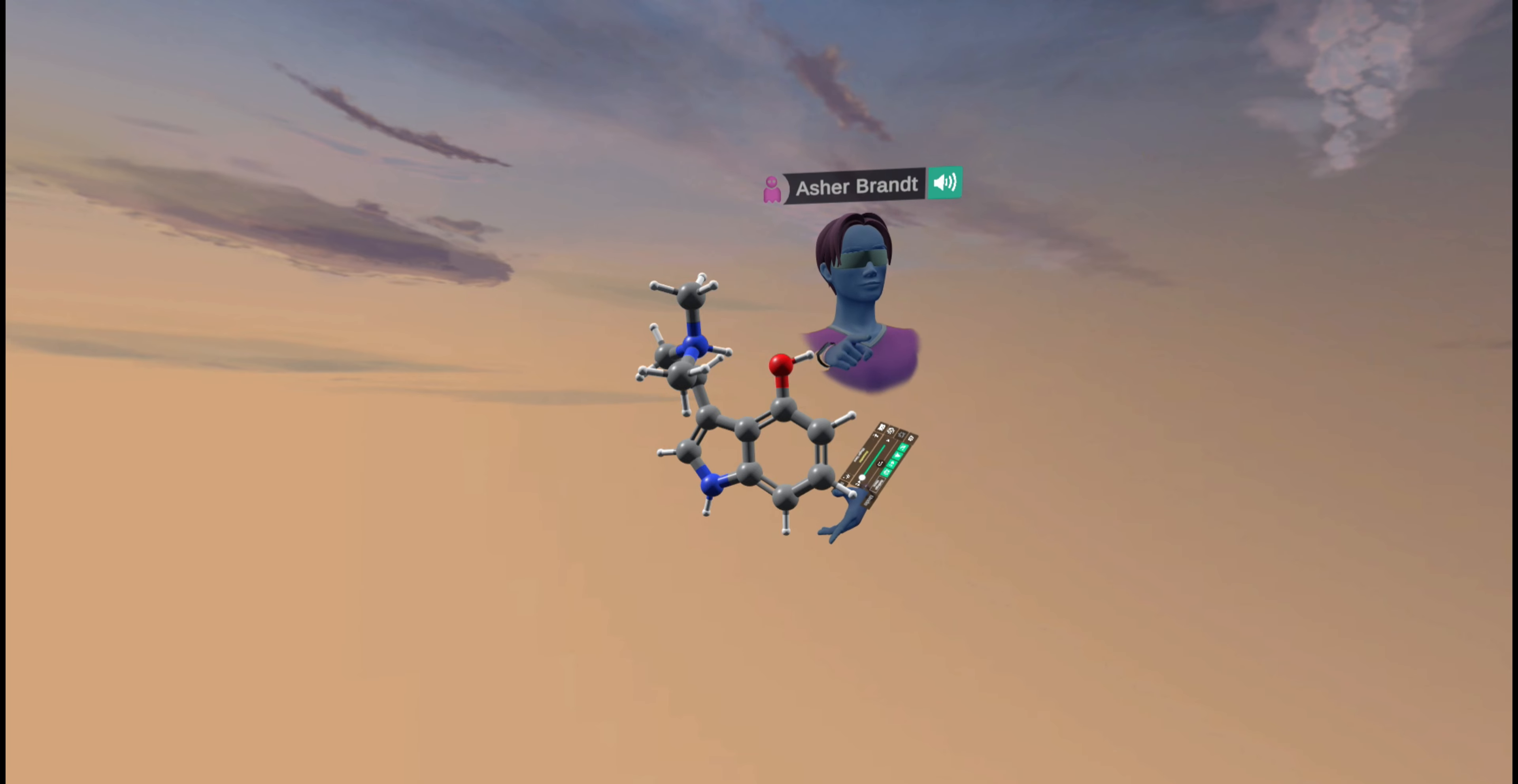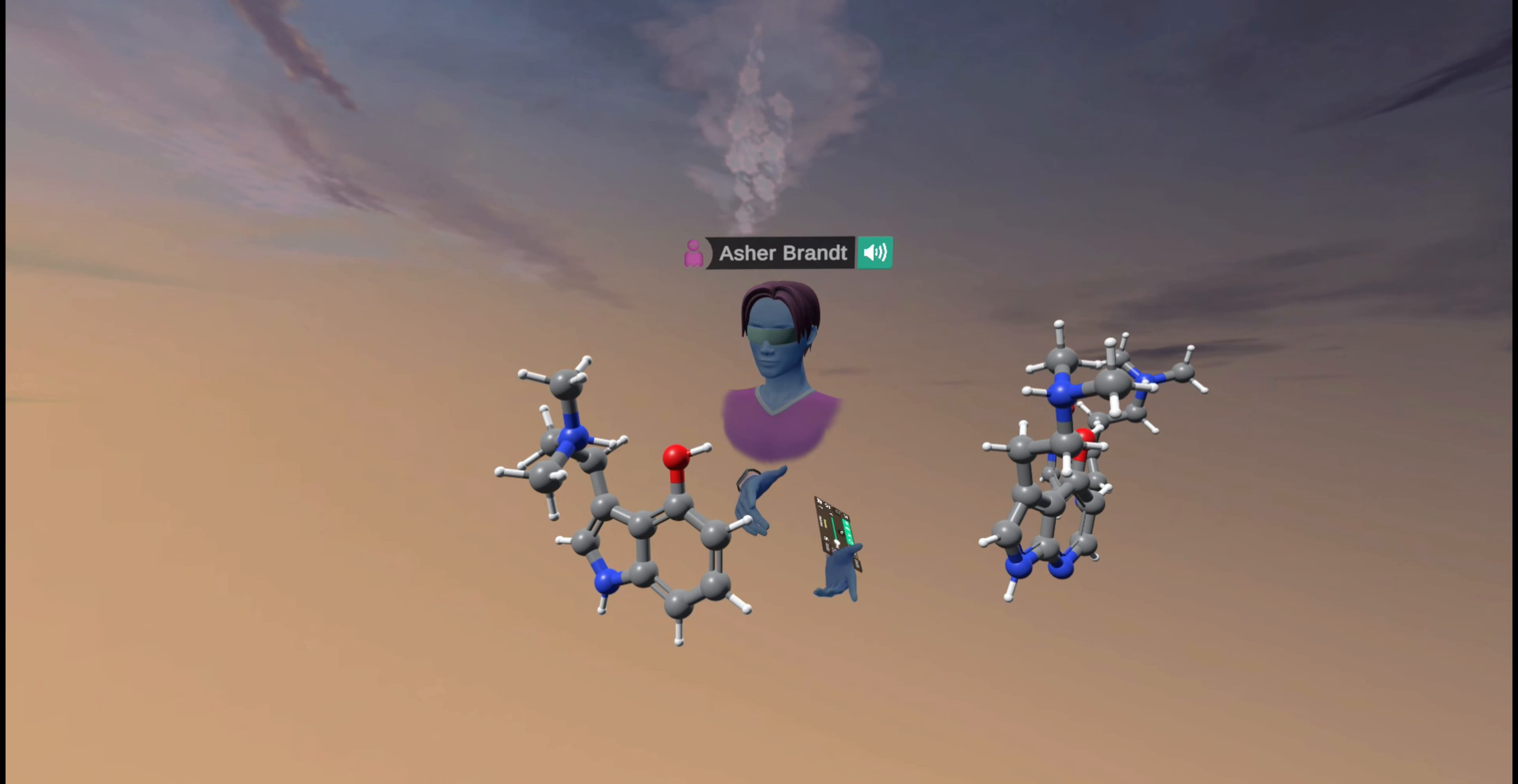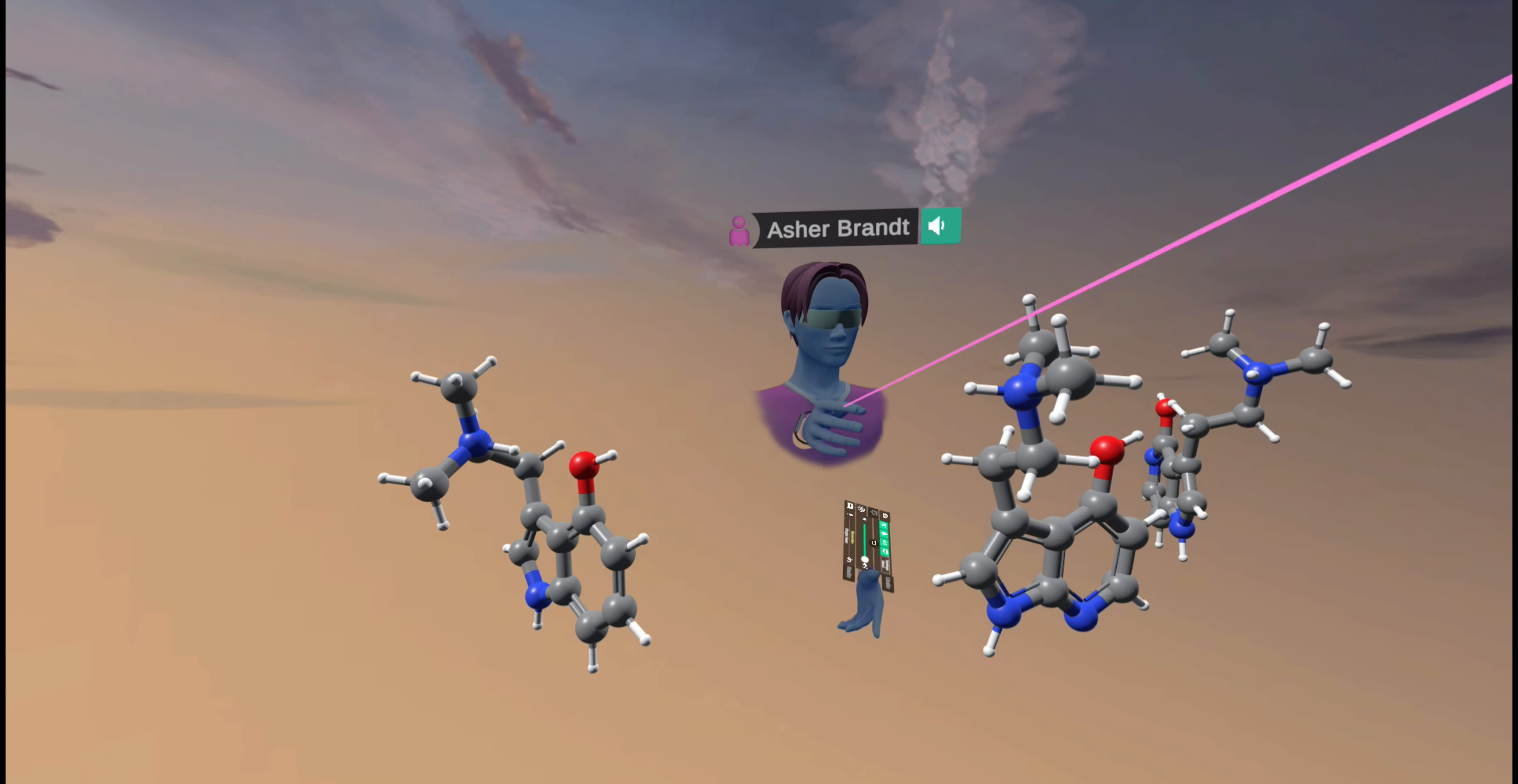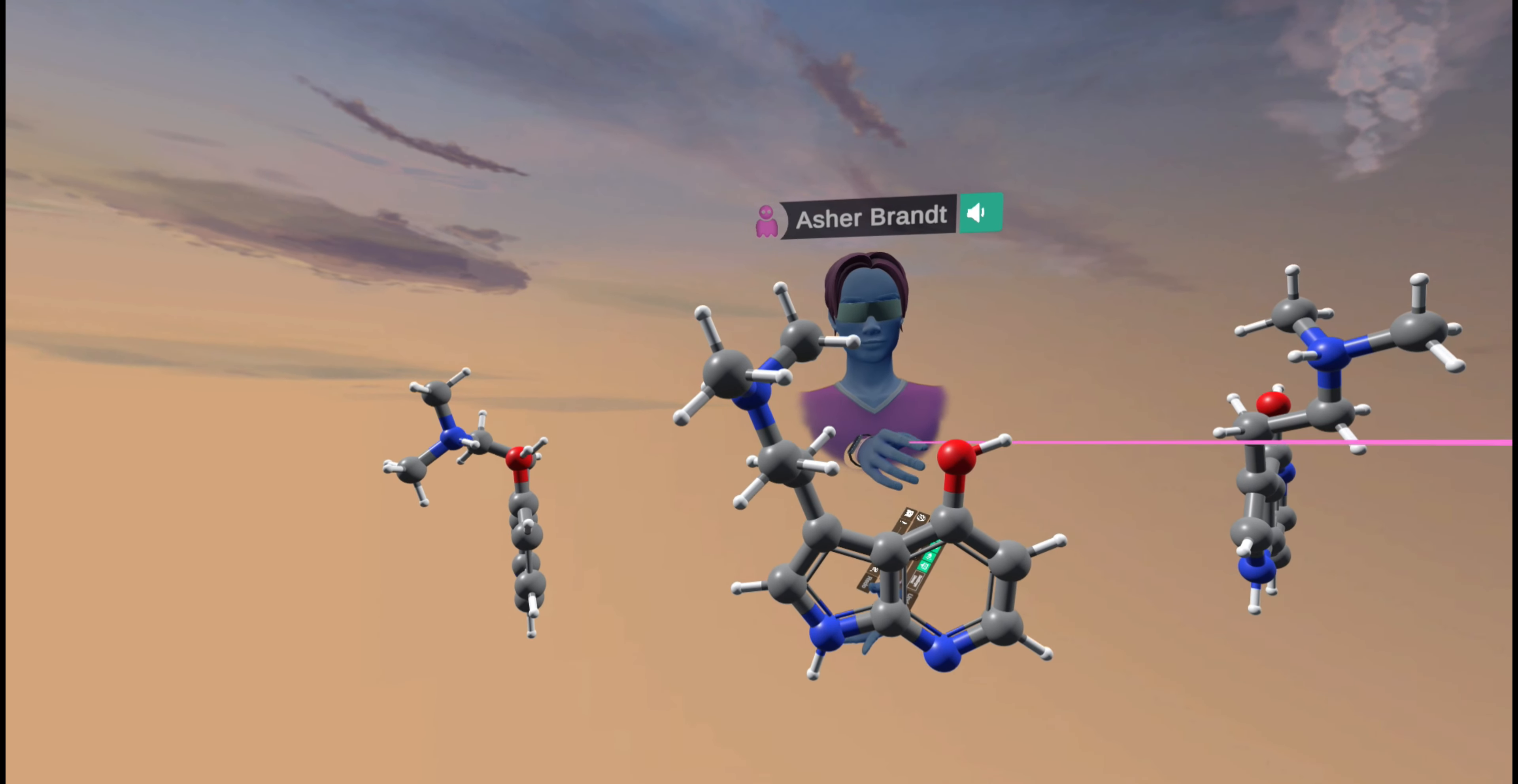So for example, let me grab a structure. I have psilocin on my right hand side, and the compound in the middle is a derivative of psilocin or a bioisostere. A bioisostere is a compound that should behave similarly chemically to the target compound in hand, which is psilocin. So the only difference between this compound and psilocin is it has this nitrogen right here, this aromatic nitrogen in the middle.